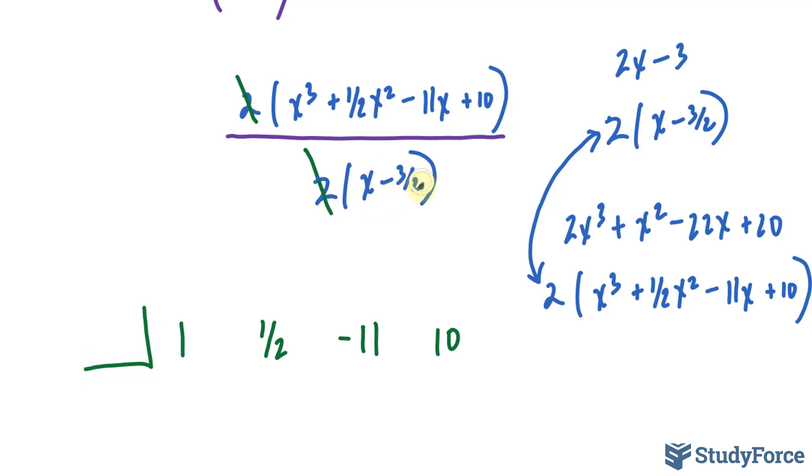And for x minus 3/2, we'll take the opposite of that, so it's negative 3/2 becomes positive 3/2.